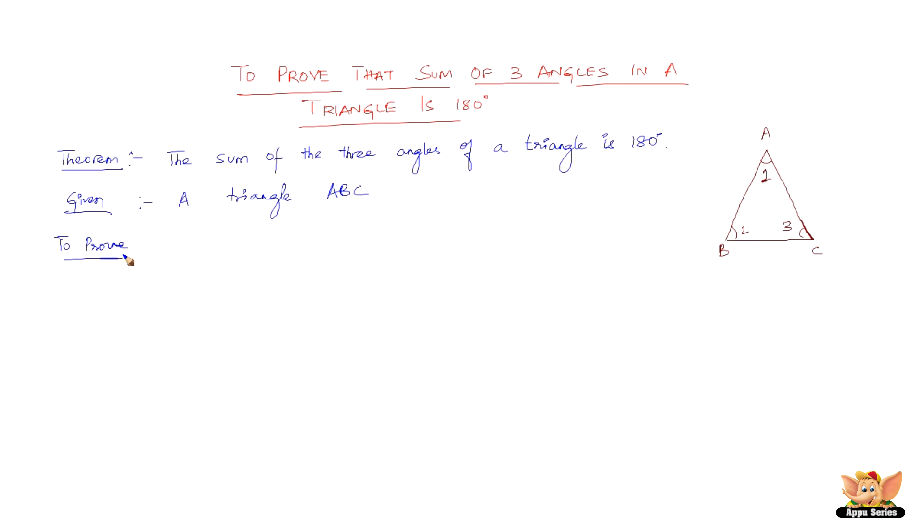What we have to prove is angle A plus angle B plus angle C equals 180 degrees, or angle 1 plus angle 2 plus angle 3 equals 180 degrees.